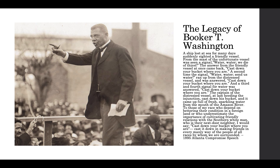Washington was speaking to white business leaders and leaders of white institutions. A defender of Washington might say that this speech was pragmatically calibrated to appeal to its audience—he was saying what he thought these white business leaders would accept. However, this speech did seem to place the responsibility for overcoming racism on the shoulders of Black people, who were just a single generation removed from enslavement. And it's given him this reputation as an accommodationist, as someone who kind of capitulated to white prejudice.